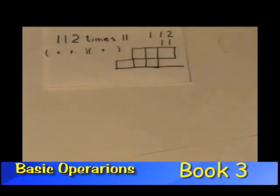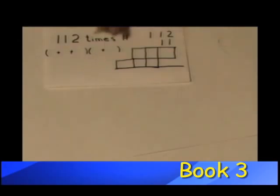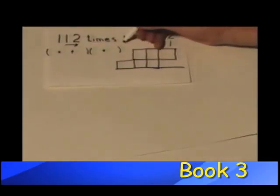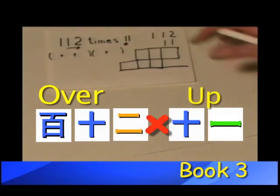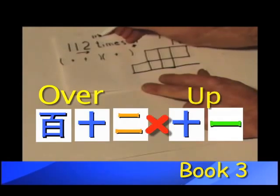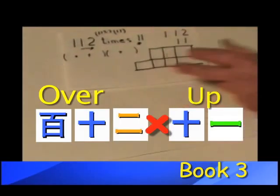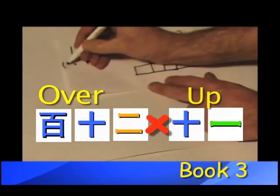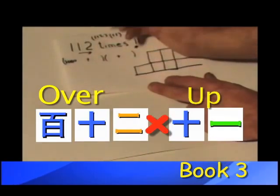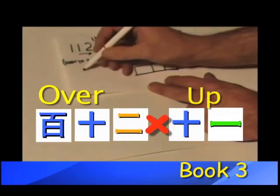We have the first name of our rectangle, the factor's name of our rectangle. We have the distance over one hundred and twelve, and we have the distance up eleven. We could write that one twelve over eleven up in the parentheses, and we could also write it longhand. Here we would write it one hundred plus ten plus two — that would be our distance over.